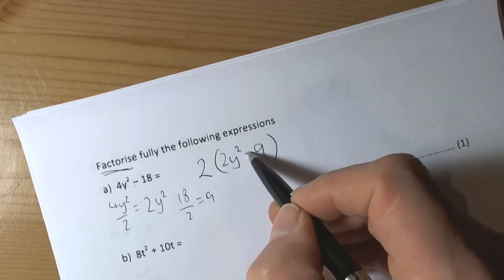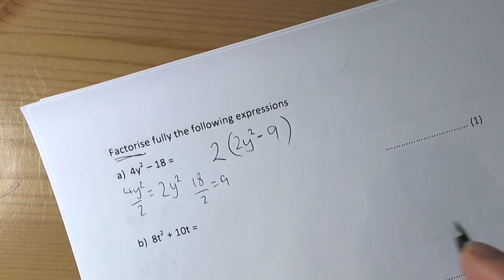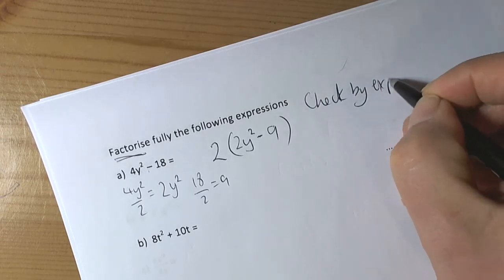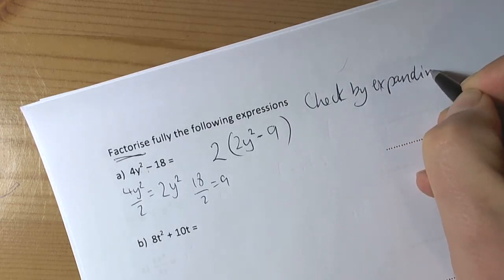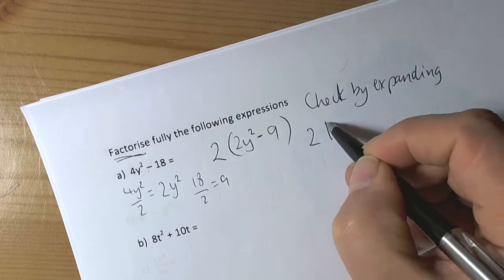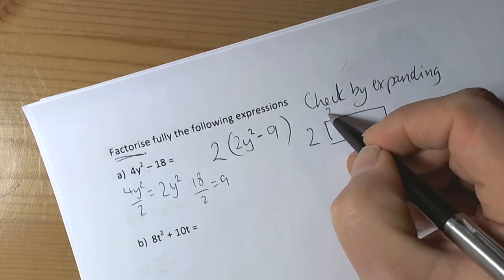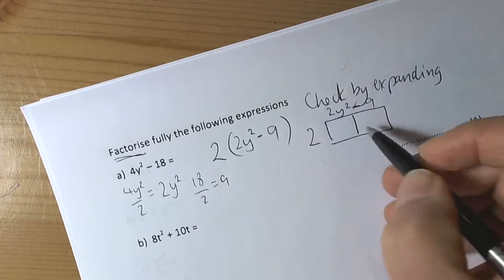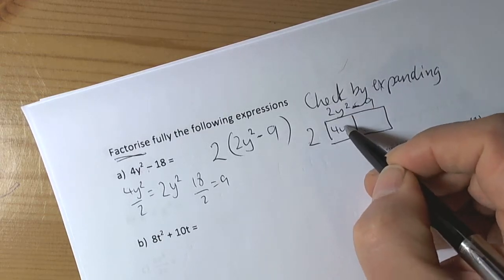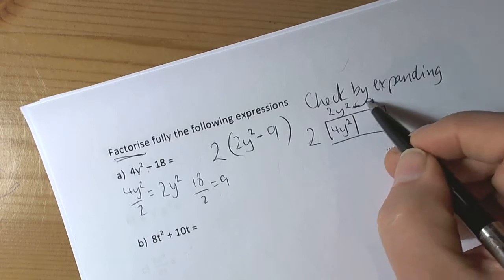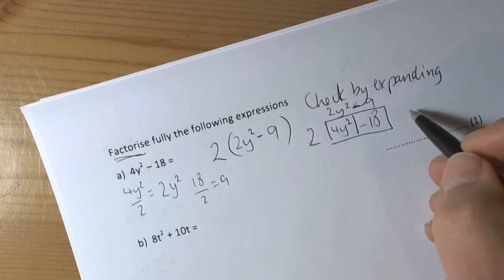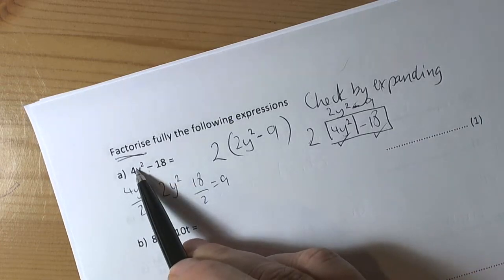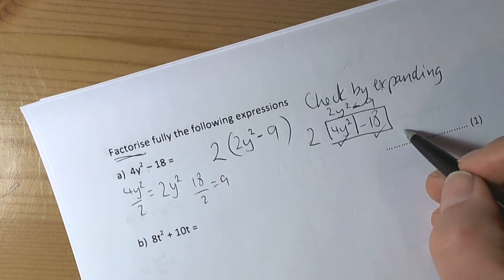We had a takeaway (minus) so we include that as well. We check by expanding, since the opposite of factorizing is expanding. Two times 2y² is 4y², and two times negative 9 is negative 18, giving us 4y² - 18. The check works, so our answer is 2(2y² - 9).